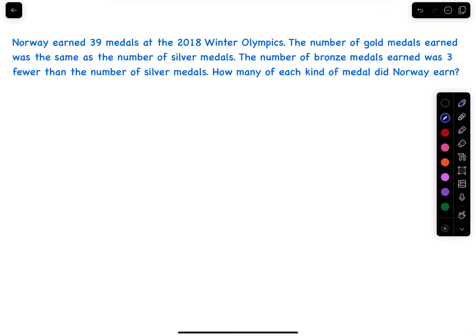Norway earned 39 medals at the 2018 Winter Olympics. The number of gold medals earned was the same as the number of silver medals. The number of bronze medals earned was three fewer than the number of silver. How many of each kind?